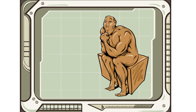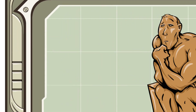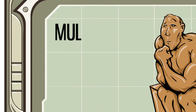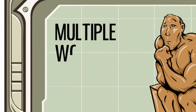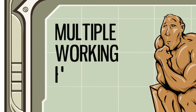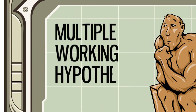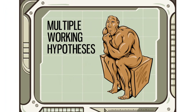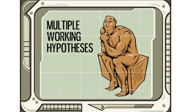Well done. But good scientists try to construct a complete list of alternative explanations when trying to understand a pattern or a process. They call this their list of multiple working hypotheses. And there are other plausible reasons why three-hops may be absent below the falls.